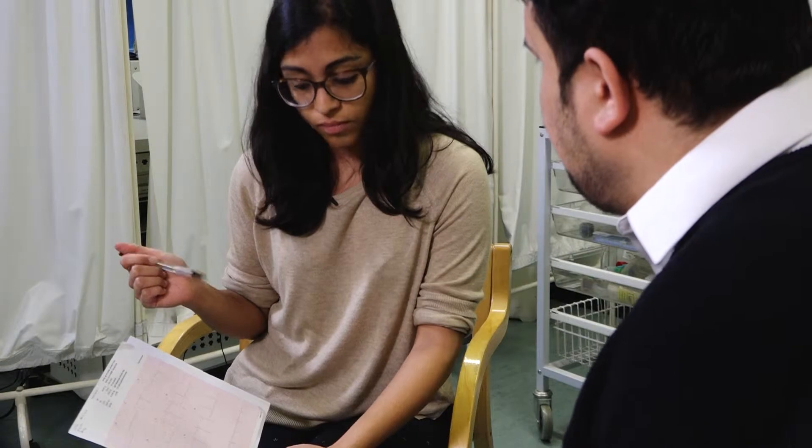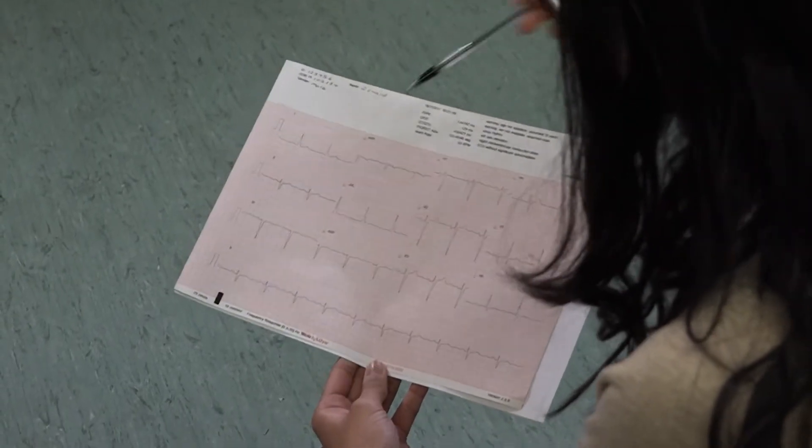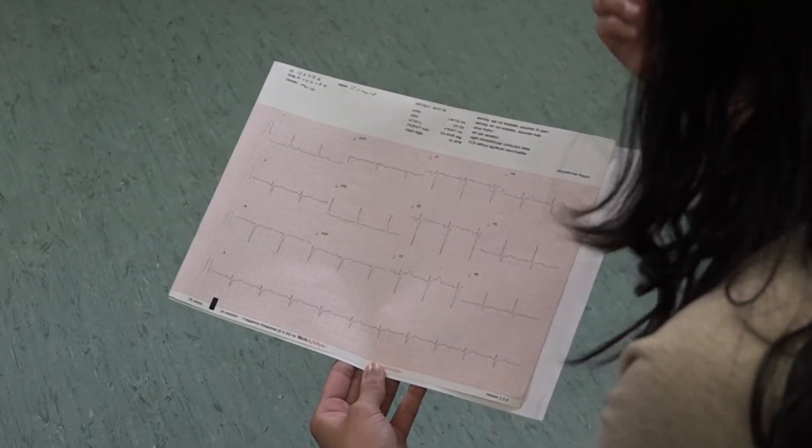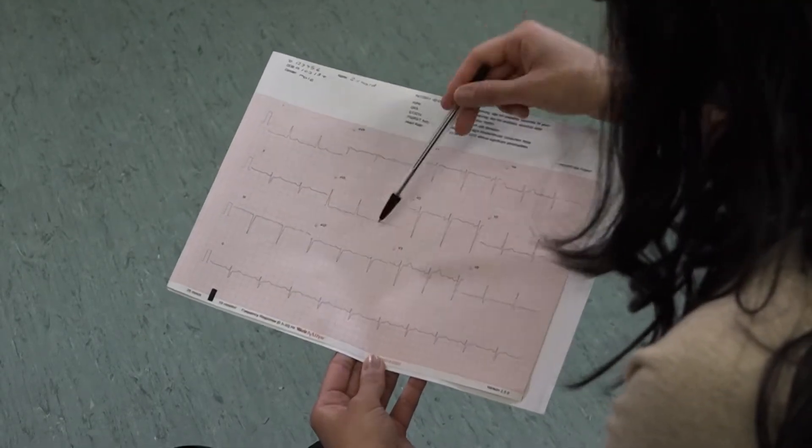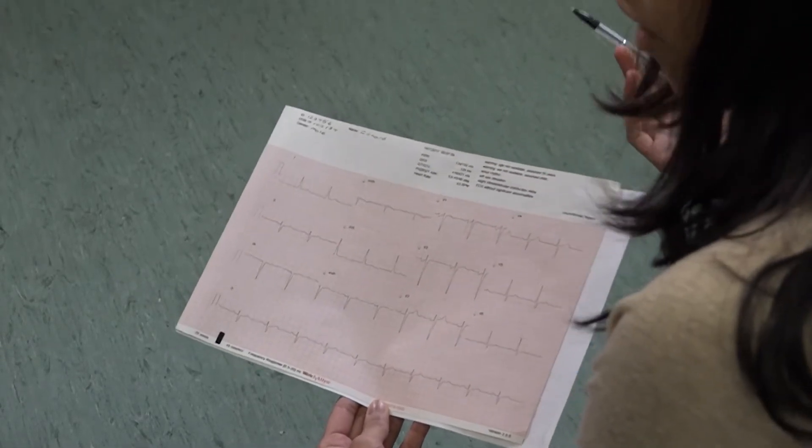And how do we determine the axis for the ECG? There are lots of different ways. One of the simplest ways is to look at two leads: leads one and leads AVF. A normal axis is when the QRS complexes in both leads one and AVF are both pointing upwards. That means they're positive QRS complexes.